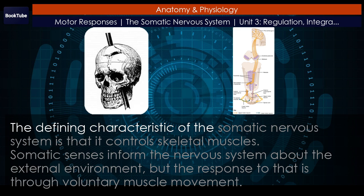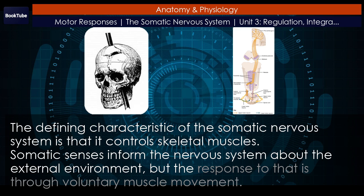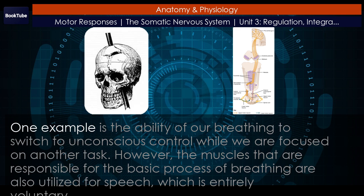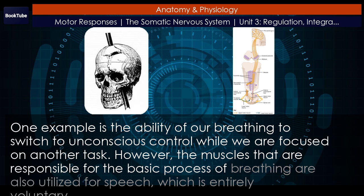The defining characteristic of the somatic nervous system is that it controls skeletal muscles. Somatic senses inform the nervous system about the external environment, but the response to that is through voluntary muscle movement. The term voluntary suggests that there is a conscious decision to make a movement. However, some aspects of the somatic system use voluntary muscles without conscious control. One example is the ability of our breathing to switch to unconscious control while we are focused on another task. However, the muscles responsible for the basic process of breathing are also utilized for speech, which is entirely voluntary.